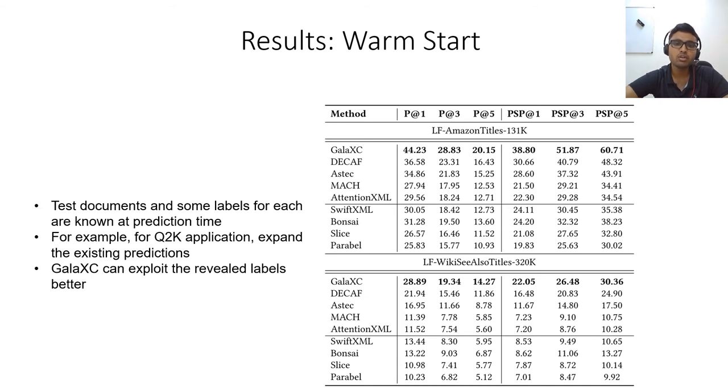As can be observed, the gains of Galaxy over baseline methods are comparatively more here compared to the standard cold-start scenario. This is because Galaxy, owing to it using a joint document label graph, can exploit the revealed labels better to correctly introduce the test documents in the graph.